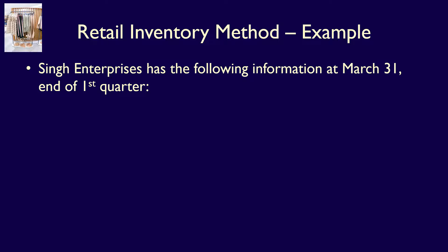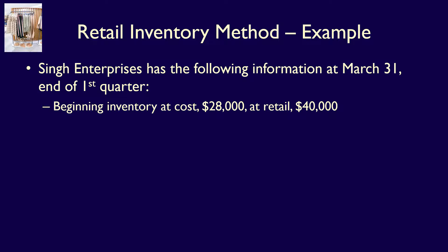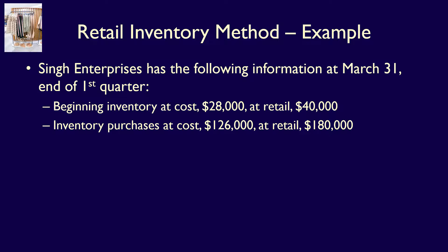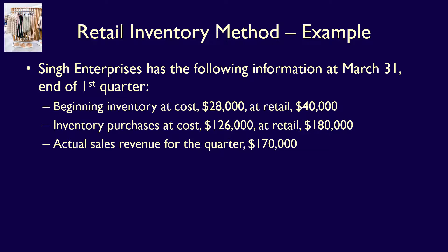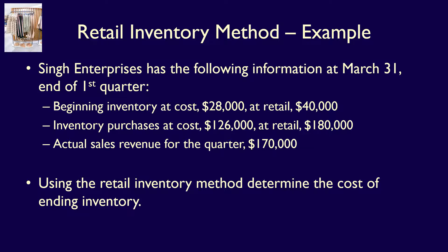Sing Enterprises has the following information available on March 31st, the end of their first quarter. Beginning inventory has a total cost of $28,000 and a total selling price, or retail value, of $40,000. The company purchased inventory during the quarter for a total of $126,000 at cost and $180,000 total retail value. They also checked their sales revenue account and determined that during the first quarter they had sales revenue of $170,000, which is the inventory sold at its retail price. Using the retail inventory method, determine the cost of the ending inventory.